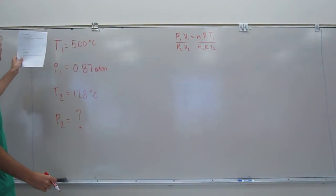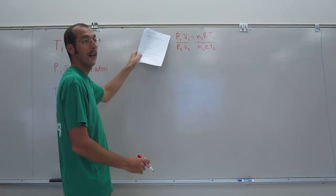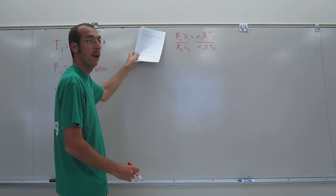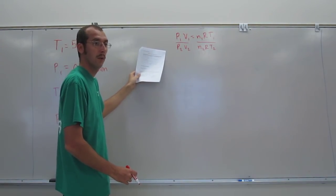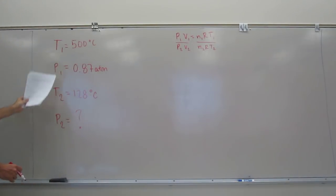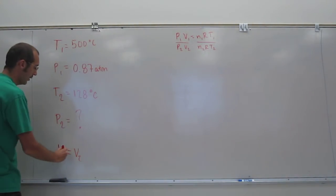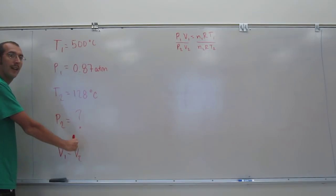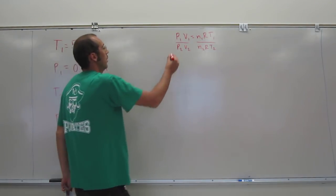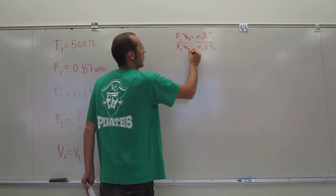And then you ask yourself, did P change? Yes. So you can't cancel that out because P1 does not equal P2. Did V change? No. So what does that mean? If V did not change, then that means V1 equals V2. So if that's the case, we can cancel both of those out.